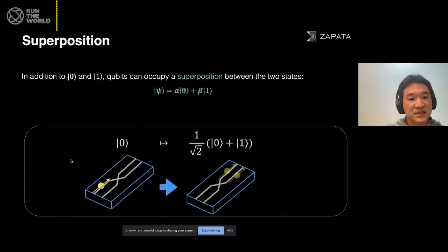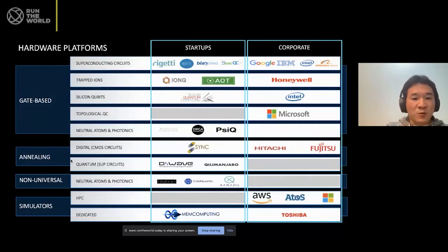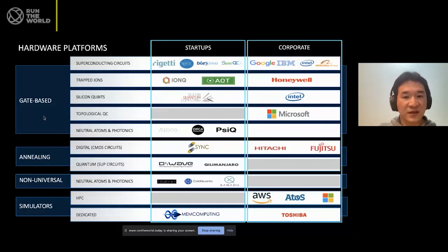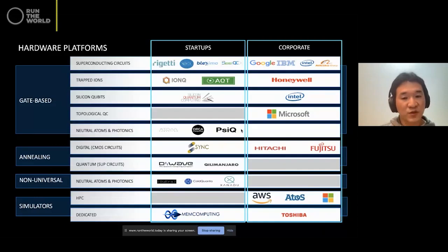A photon is a quantum mechanical state — this is how we store quantum state information. As for hardware platforms, there are many companies working on this. There are many companies sponsoring this event — IonQ, IBM, and Google — so many notable, great companies, and many many startups as well. It's truly a new technology with a lot of people working together and also competing.